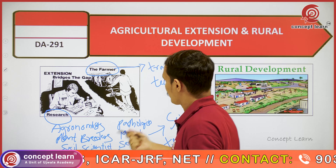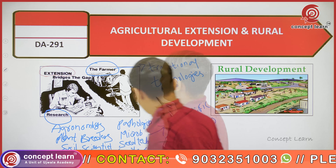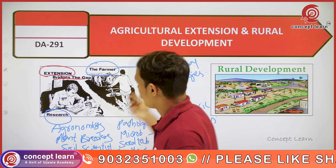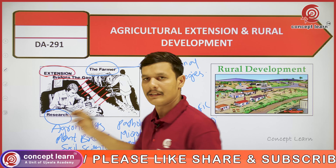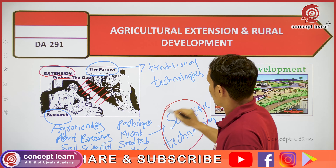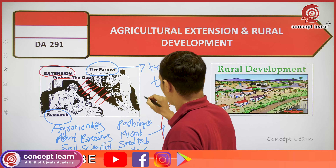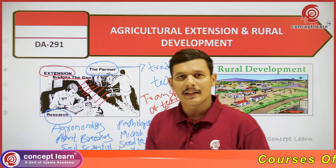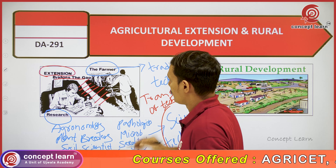Then who will take these technologies to the farmer? That is where the role of extension comes in. It bridges the gap — it removes the barrier and acts as a bridge between the research and the farmers. All these scientific technologies have been transferred to the farmer; that is transfer of technology. The main role of extension is to bridge the gap between the research and the farmers and to transfer the technology.